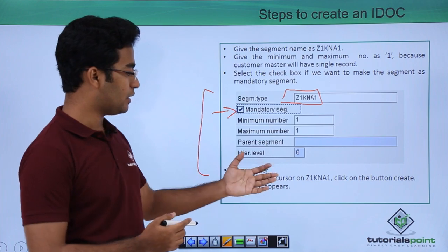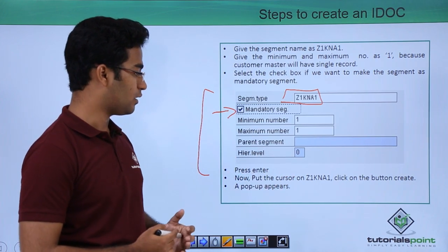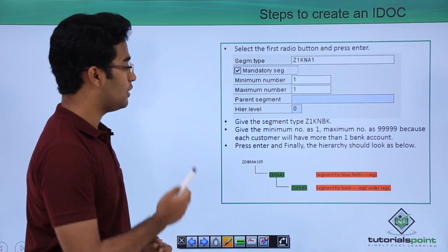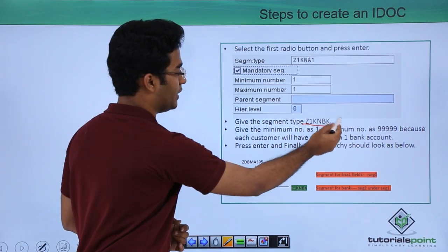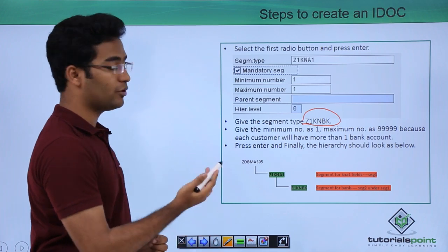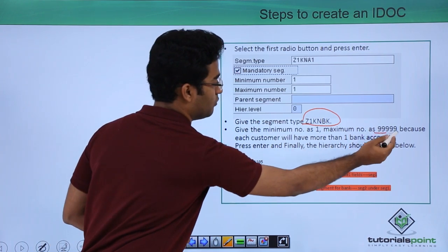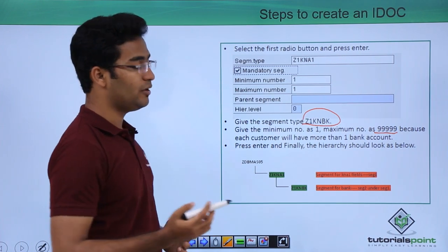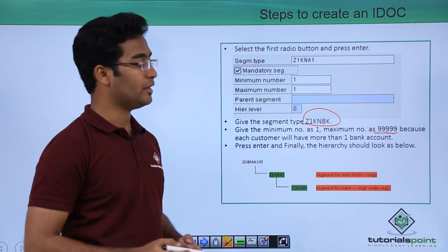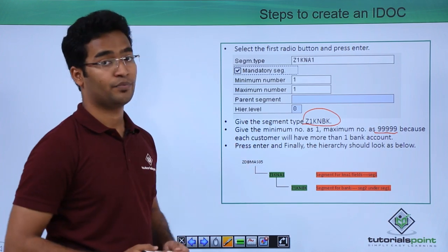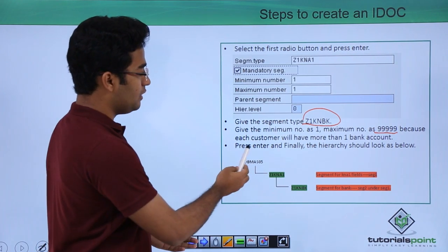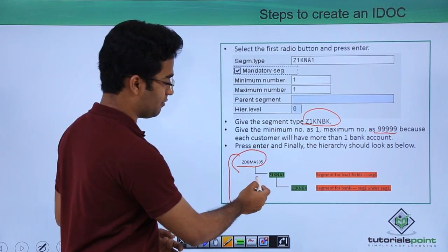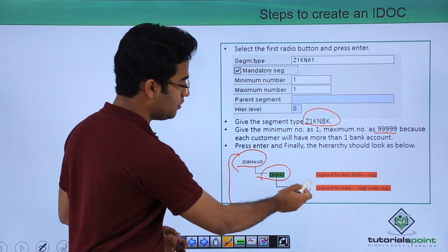Now press enter. Put the cursor on Z1KNA1 and click the create button — another pop-up appears. Here we have to provide the segment name as Z1KNBK, and we have to put the minimum as 1 and maximum as 9999, because each customer will have more than one bank account. Now press enter and finally the hierarchy would appear showing our IDOC name, first segment, and second segment.